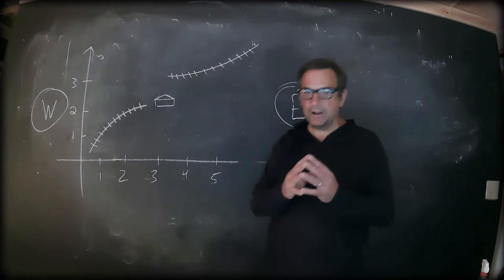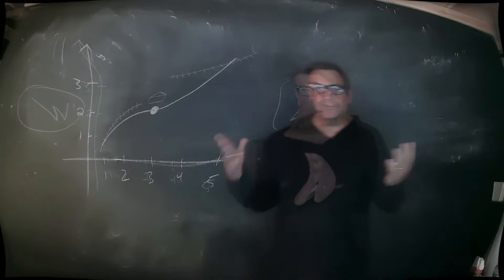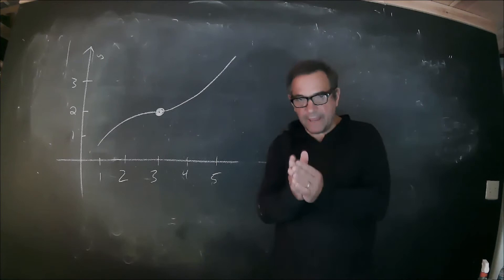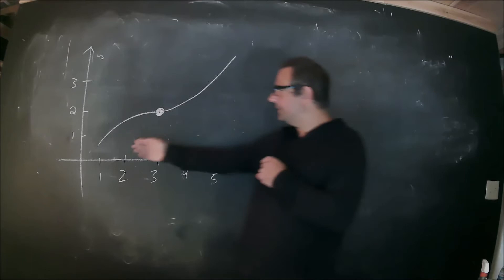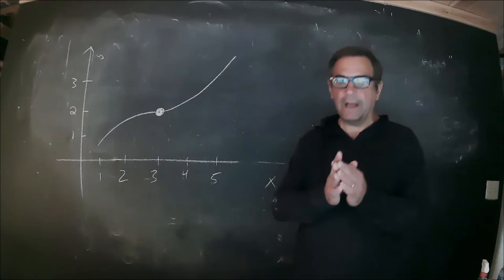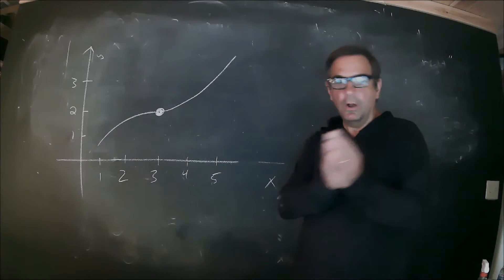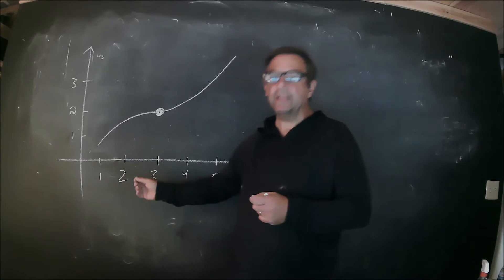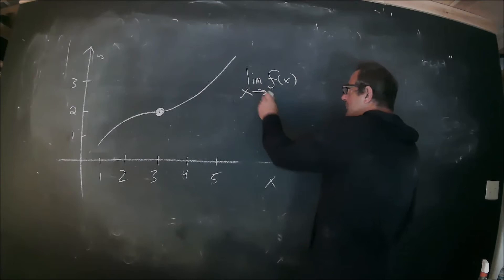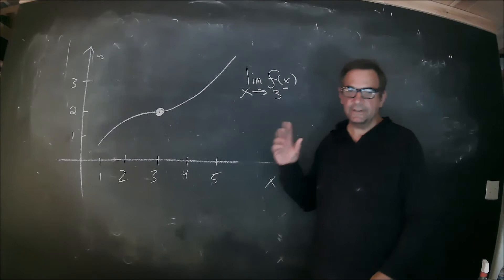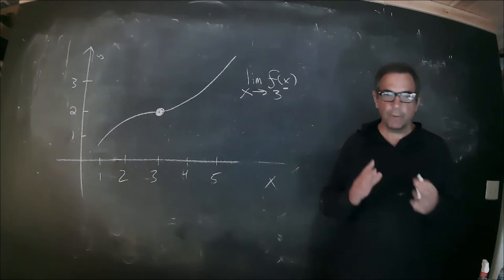I'm going to use this railroad as a metaphor to begin talking about the limit of a function of one variable. Instead of railroad tracks, we now just have a curve, and we'd like to discuss its behavior around an x-coordinate of three. In order to discuss the behavior of the curve as it approaches three, we use the notation: limit of f of x as x approaches three with a minus sign.